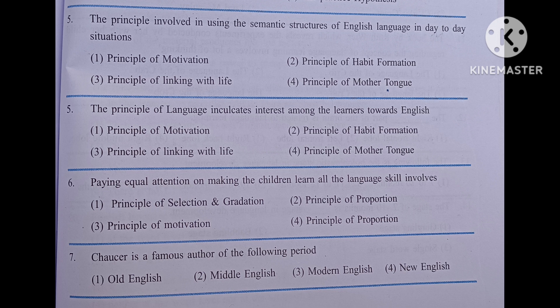Paying equal attention on making the children learn all the language skills involves: number one, principle of selection and gradation; number two, principle of proportion; number three, principle of motivation; number four, principle of proportion. The answer is principle of proportion.